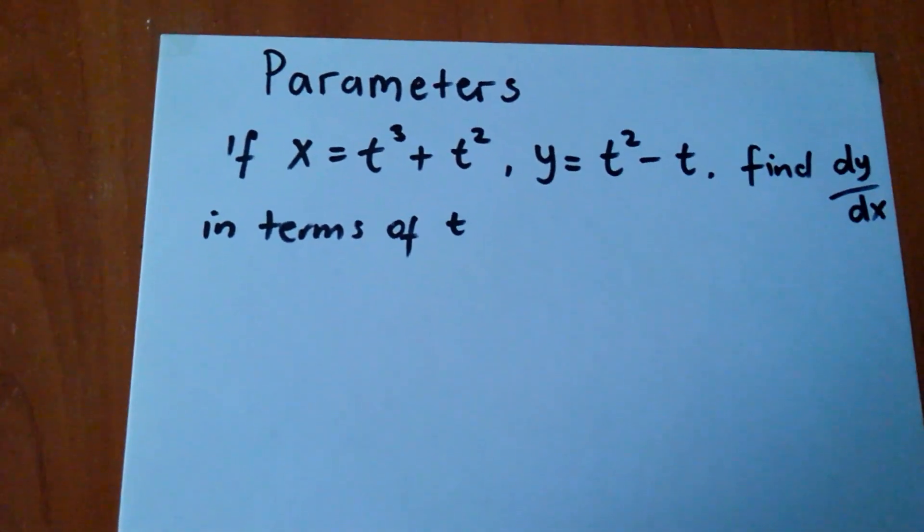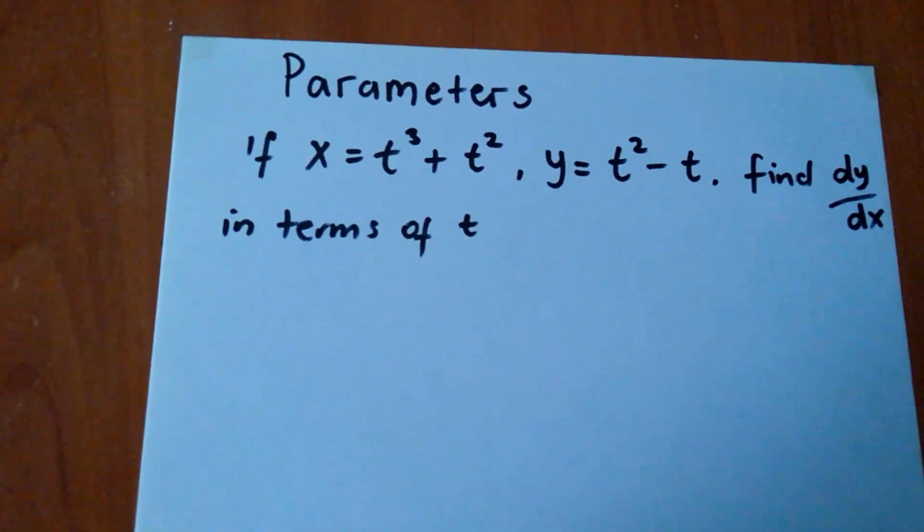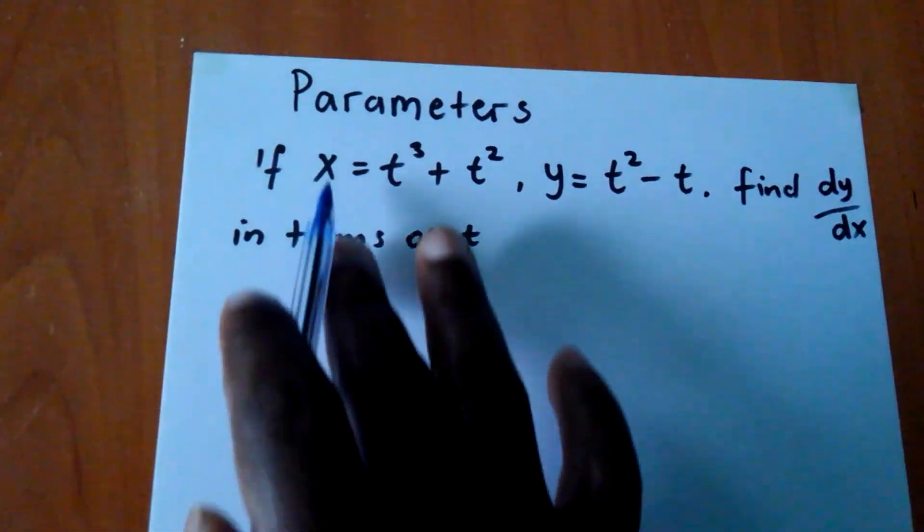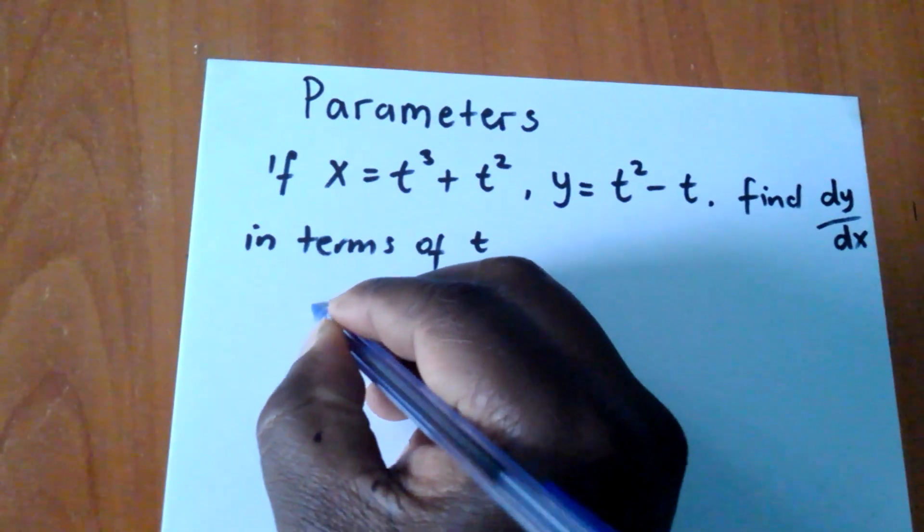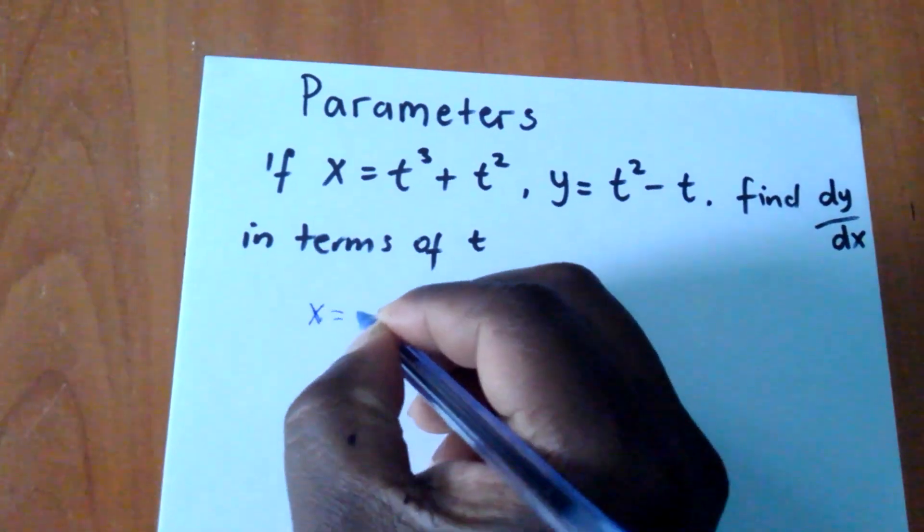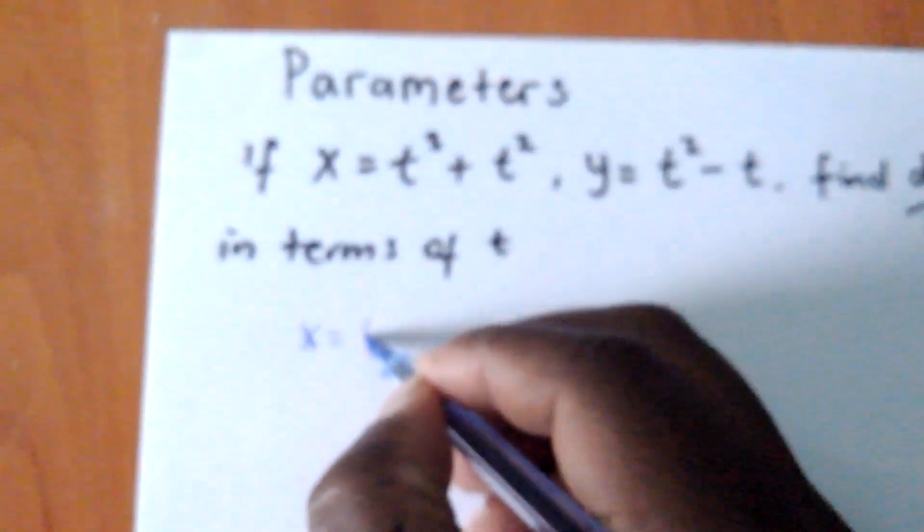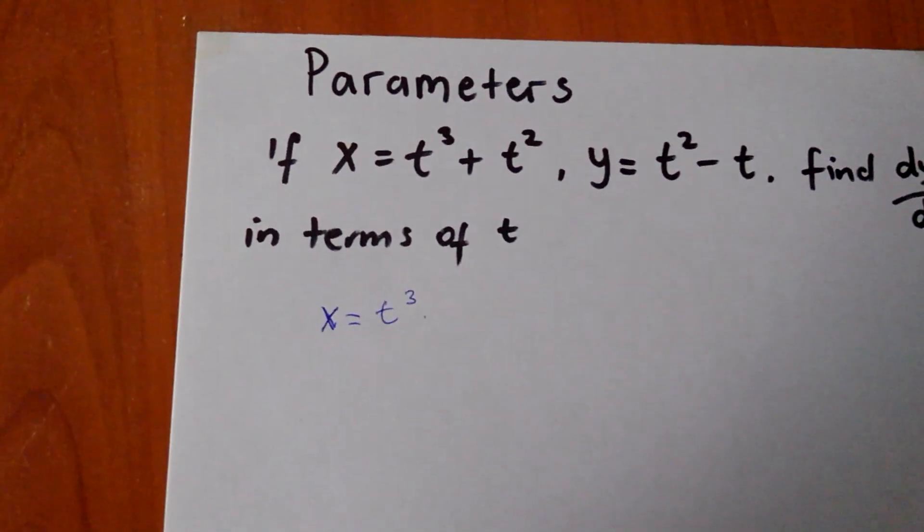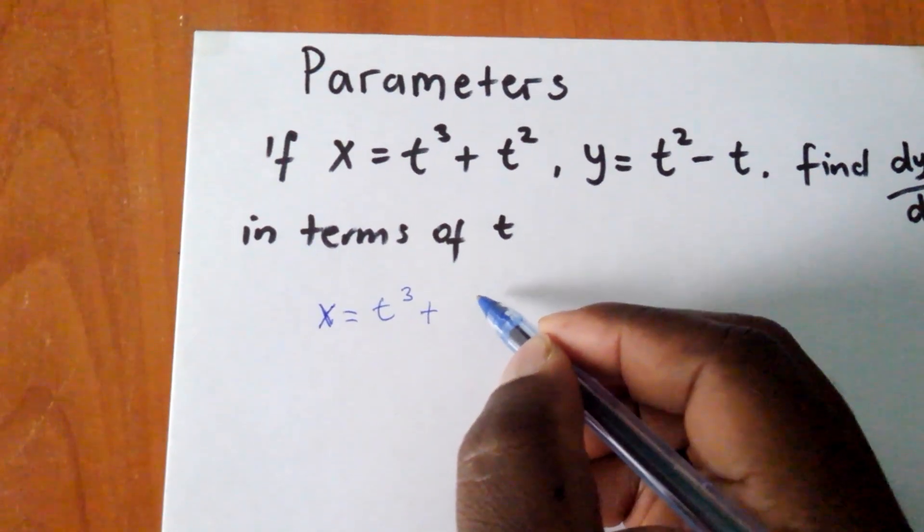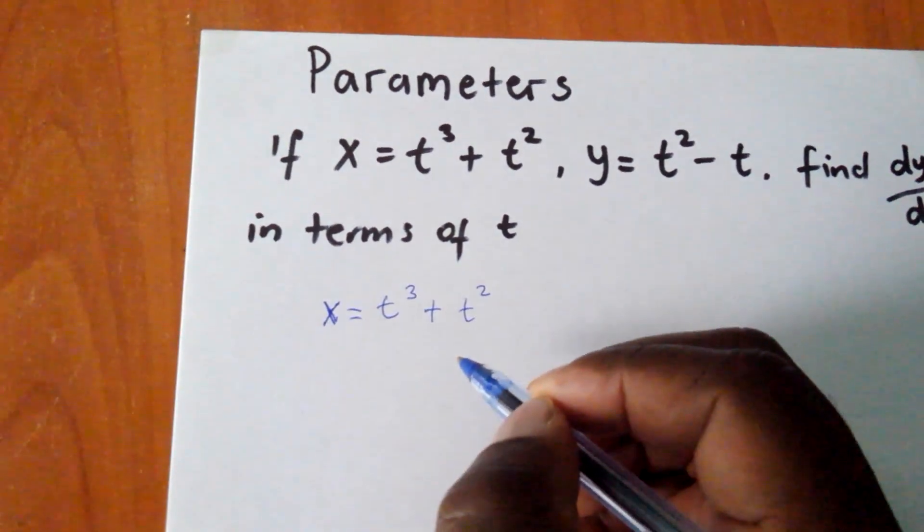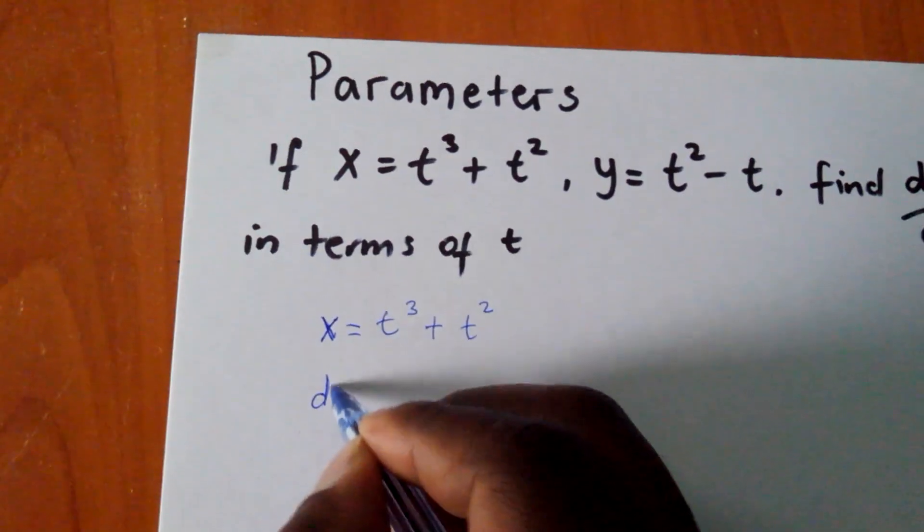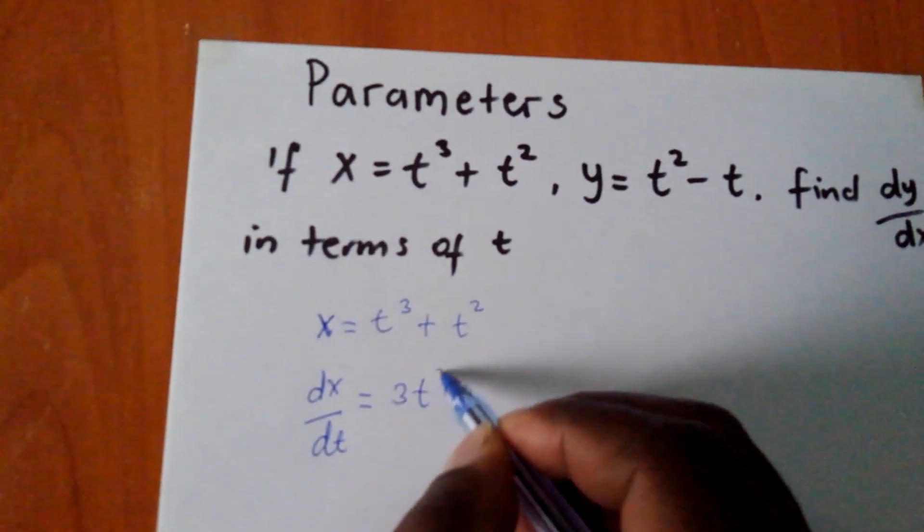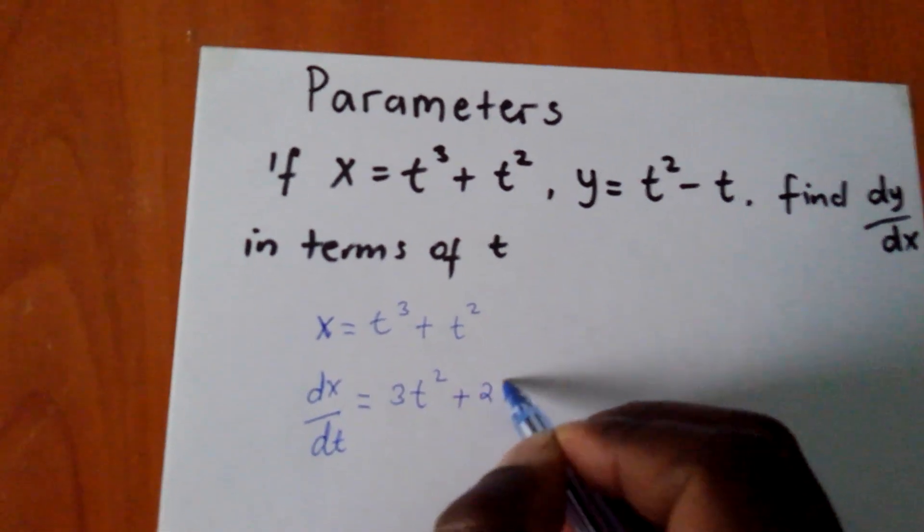So in this instance, what do we do to find our dy/dx in terms of t? First of all, we shall start with our x. If my x equals t to power 3 plus t squared, therefore my dx/dt will equal 3t squared plus 2t.